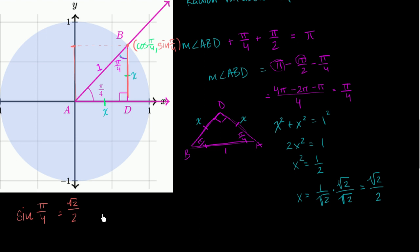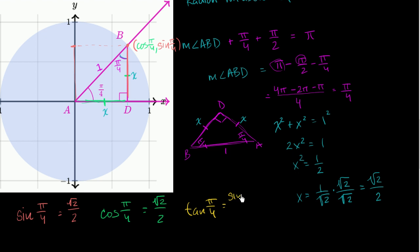The cosine of pi over 4 is the x-coordinate, which is the length of segment AD — also square root of 2 over 2. Finally, the tangent of pi over 4 is sine over cosine, which is (square root of 2 over 2) divided by (square root of 2 over 2), giving us 1. This also makes sense because the tangent equals the slope of the line: for every x we move horizontally, we move x vertically, so the slope is x over x, which equals 1.